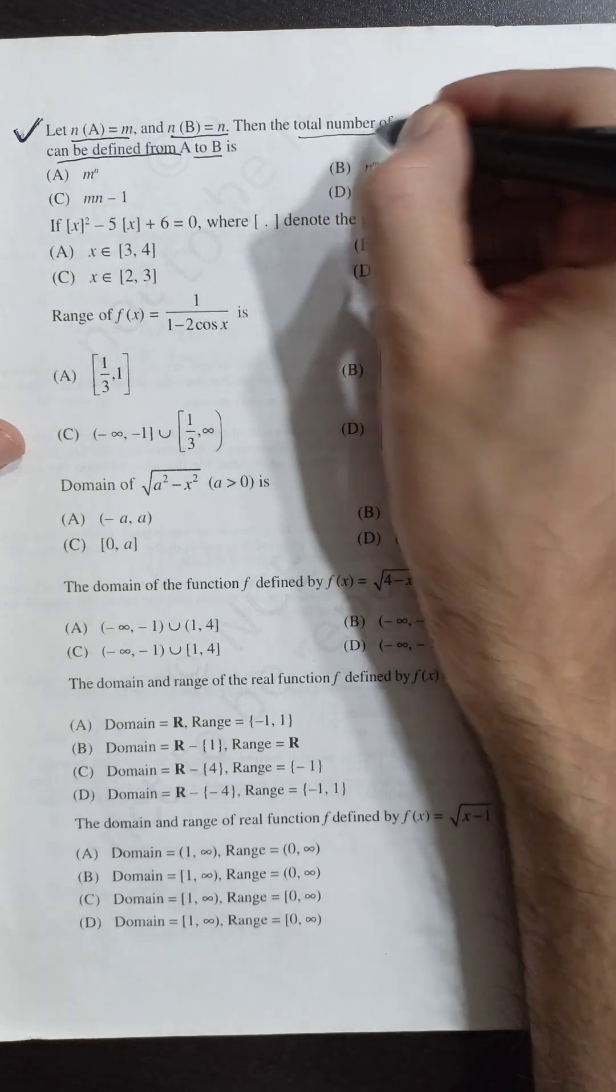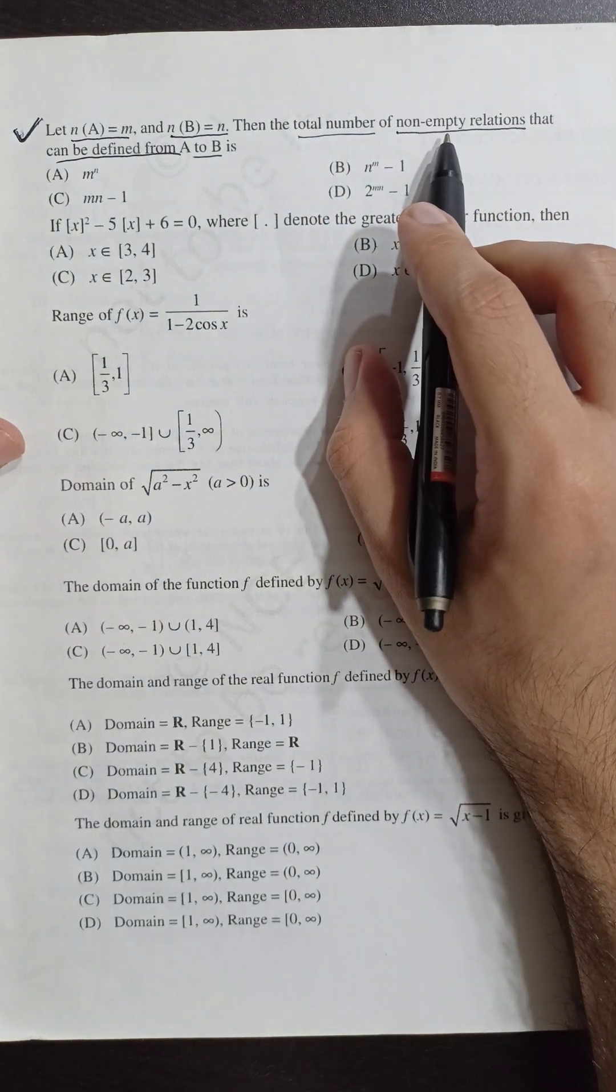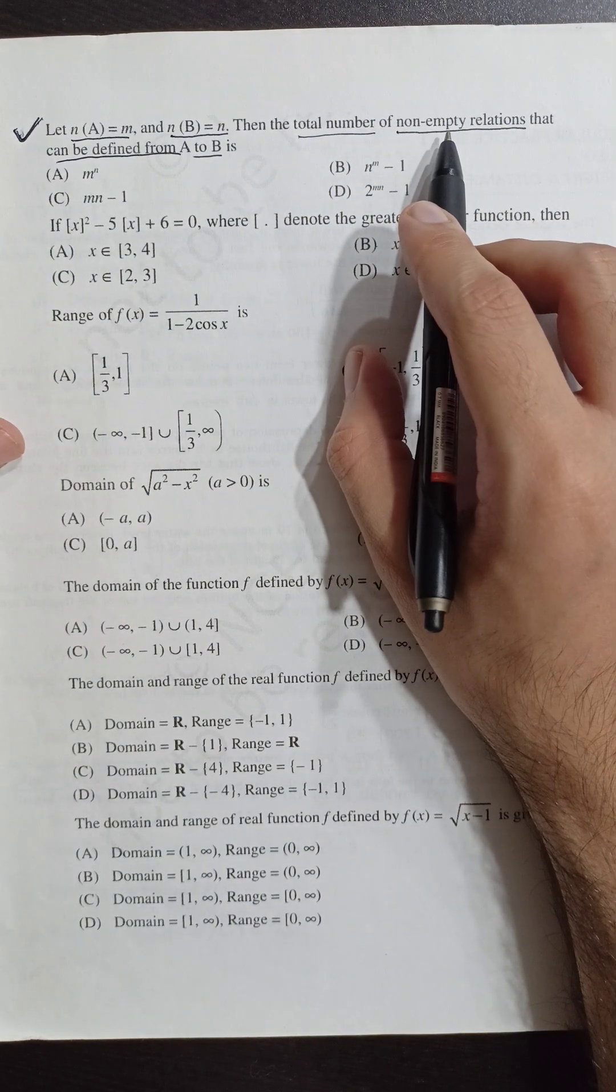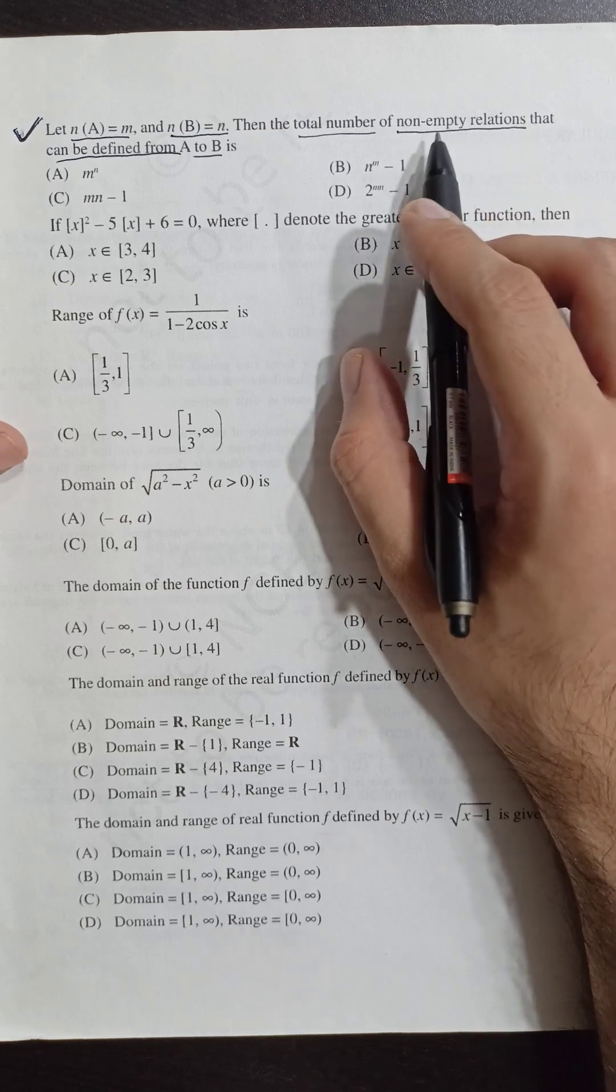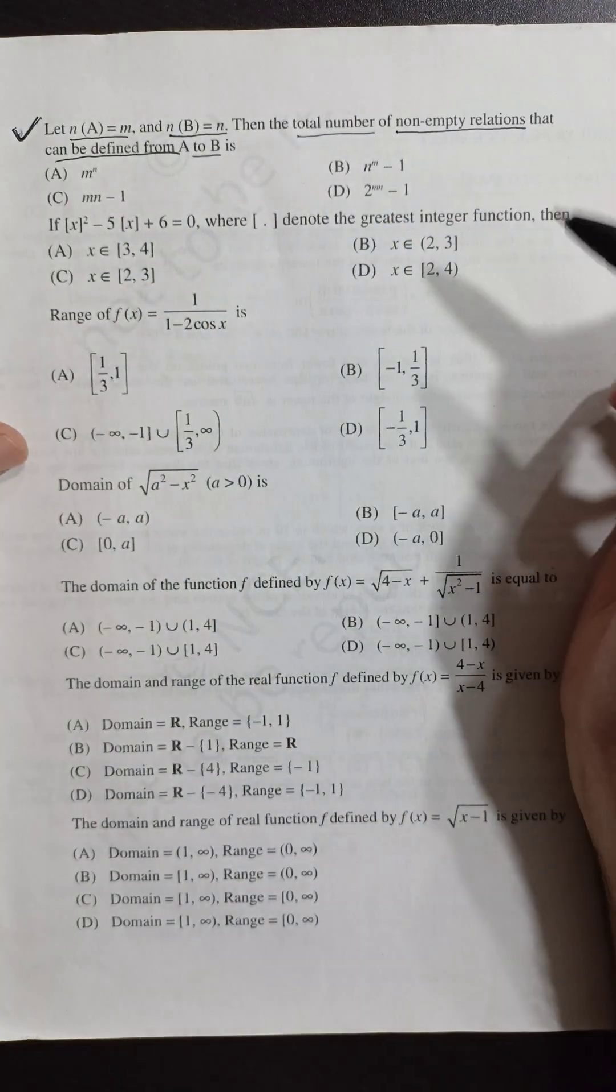And we have to find the total number of non-empty relations that can be defined from set A to set B.